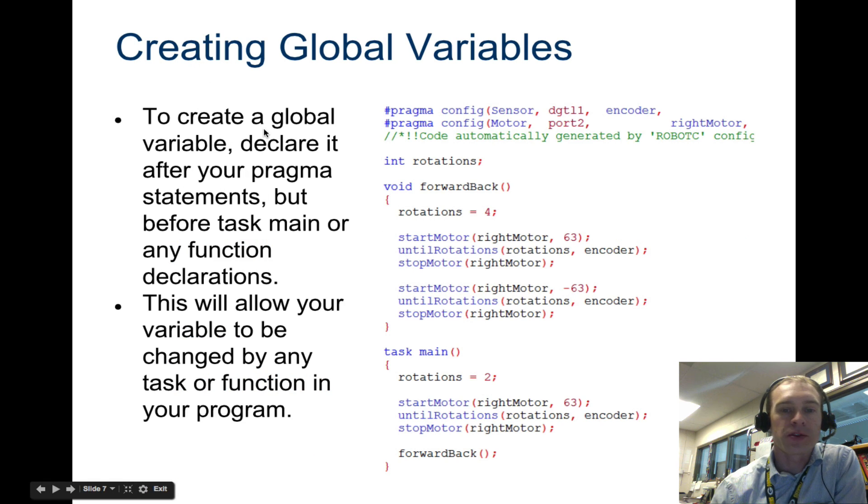So we'll look at global variables first. Global variables are declaring that variable outside of task main. So we've set int rotations, we've declared the variable here, and now here is the addition of a function, which uses the word void. So we're not going to deal with that too much, the only thing you need to know right now is just that a global variable is set outside of task main. You can see task main is way down here, and then you have this other weird thing in here, this void thing. We'll look at that next.